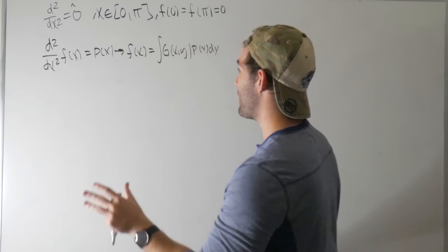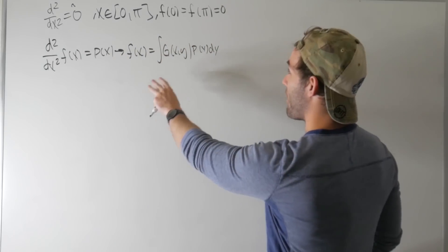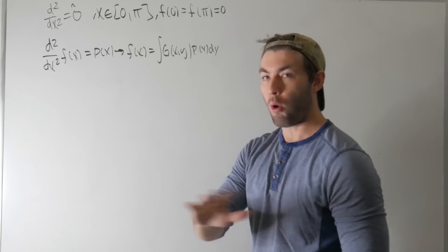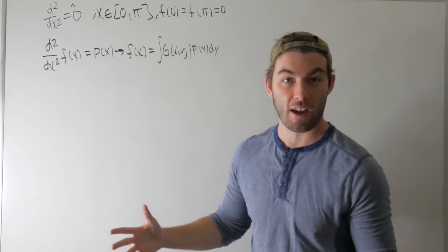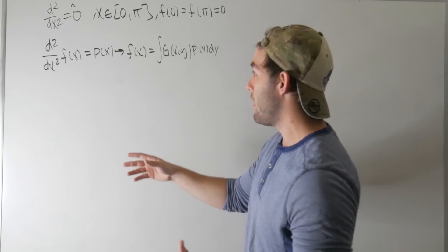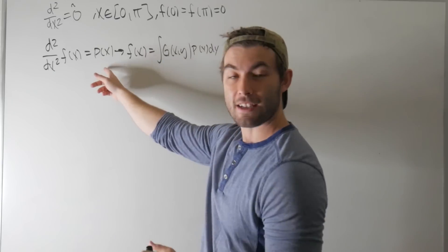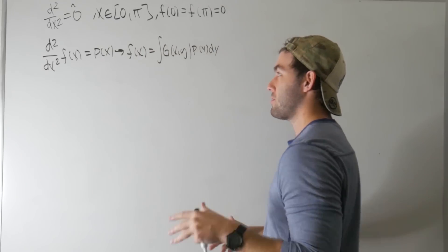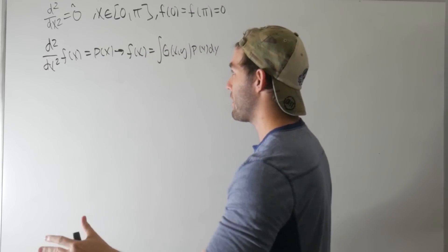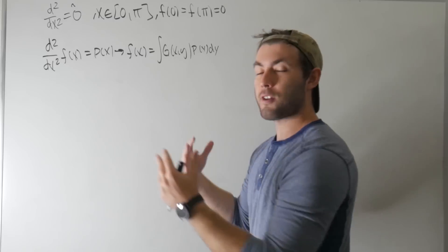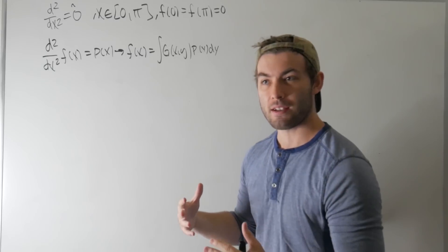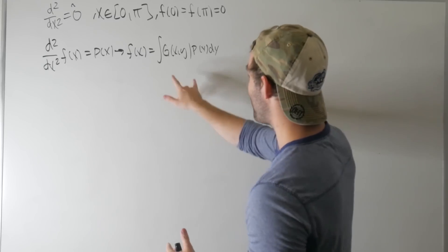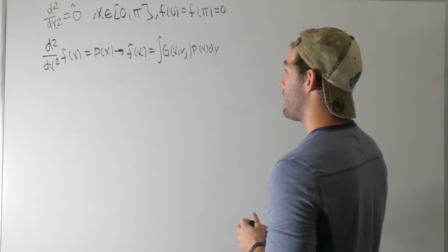Once we find the Green's function based on the operator and the boundary conditions, it doesn't actually matter what p(x) is. So we've solved a whole family of problems where p(x) might be different. That's why even though Green's functions can be difficult to find, you get so much out of it — you've simultaneously solved a whole class of problems.